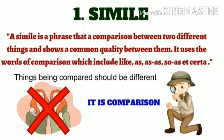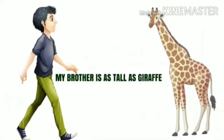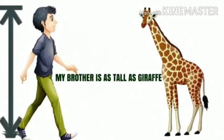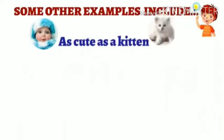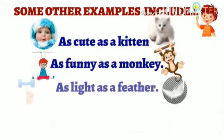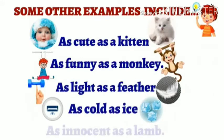One of the most perfect examples of simile is: 'My brother is as tall as a giraffe.' Here, the boy is not being compared with the giraffe, but the height of the boy is being compared with the height of a giraffe. Some other examples include: as cute as a kitten, as funny as a monkey, as light as a feather, as old as time, as innocent as a lamb.